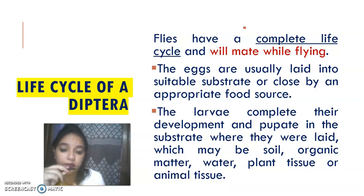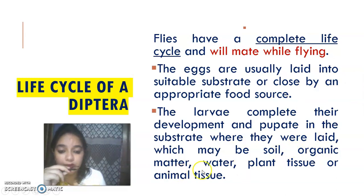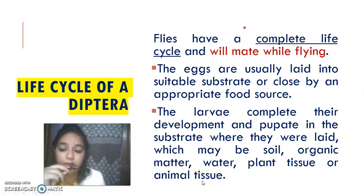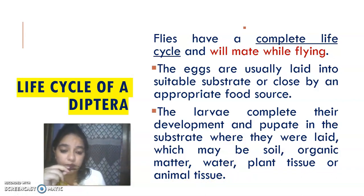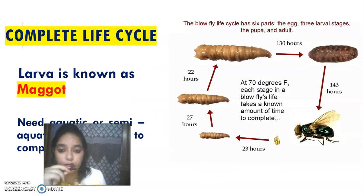Pupation also occurs where the eggs were laid. The pupation site can be soil, organic matter, water, plant tissue, animal tissue, or anything nearby. An important specific behavior is that eggs are only laid in a location where there is a food source to develop the larvae.